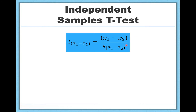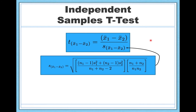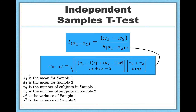Unfortunately, the standard error here is a little less pretty than for the one-sample z-test and one-sample t-test. For the one-sample t-test, standard error is simply standard deviation divided by the square root of sample size. This formula is less attractive, but there are only six things you need to complete the entire formula — to find the standard error and then the overall t-test statistic.